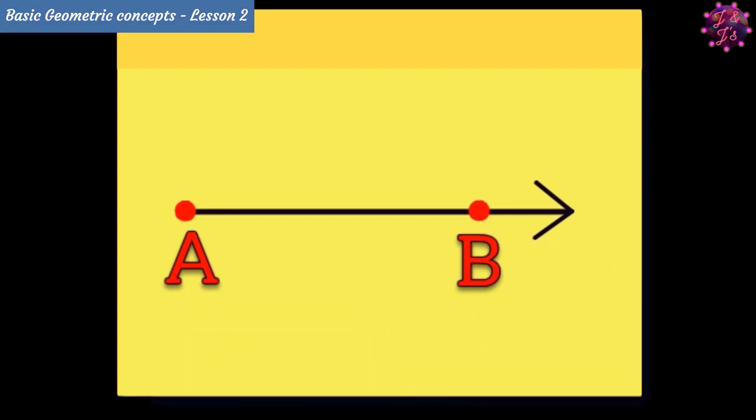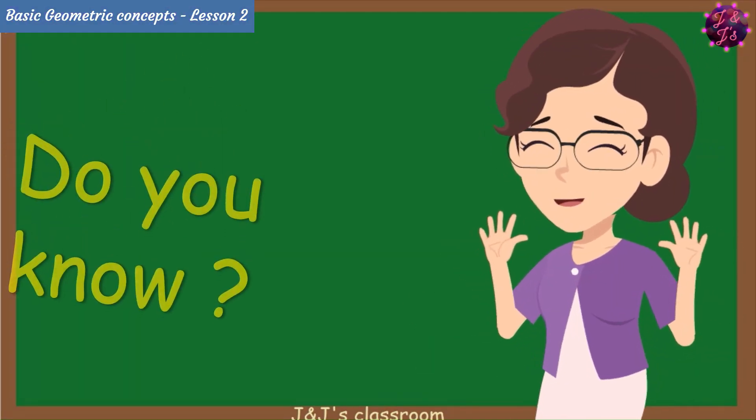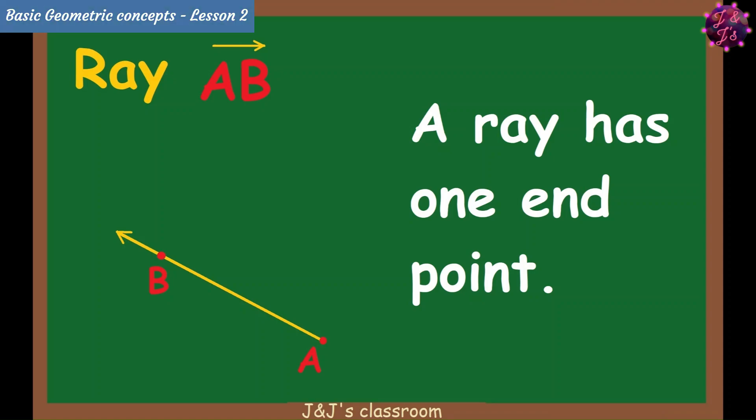Then, name the points A and B. So, now this is a ray AB. And, do you know guys? A ray has one end point.